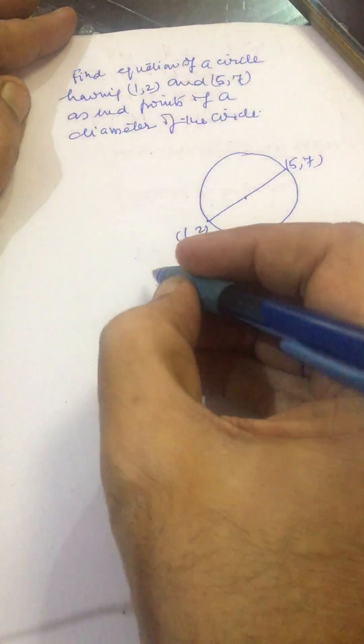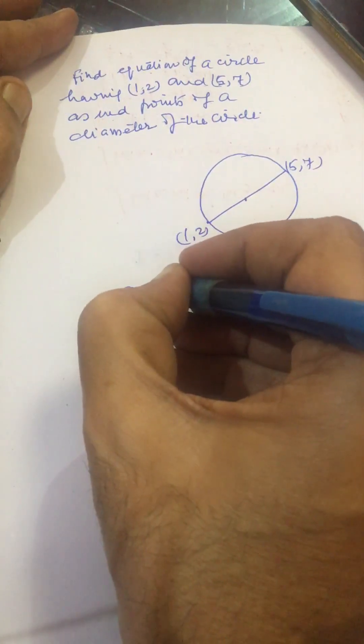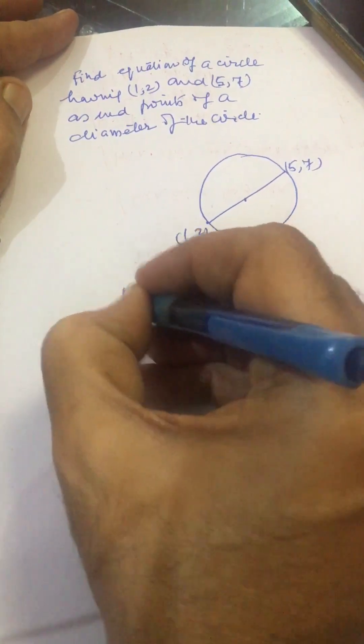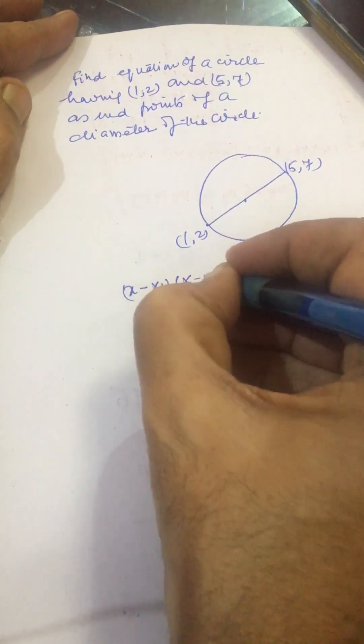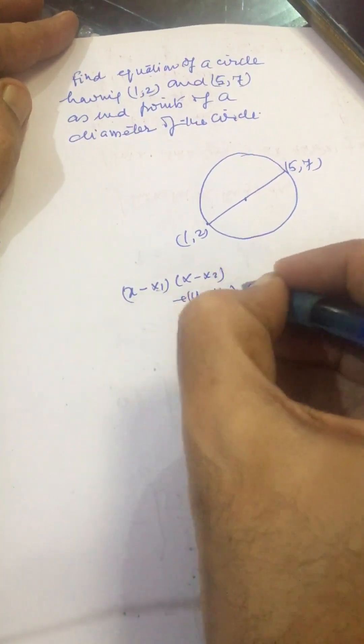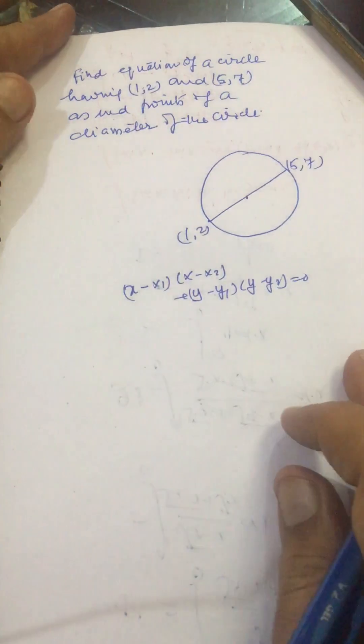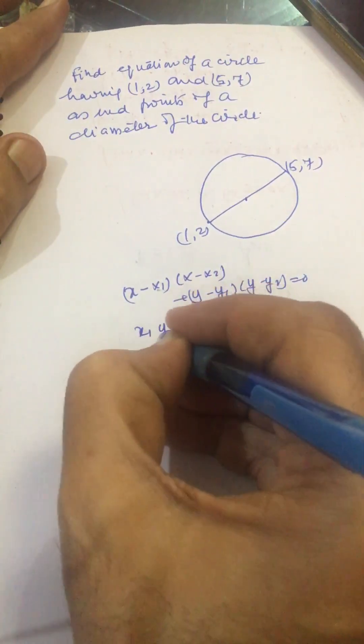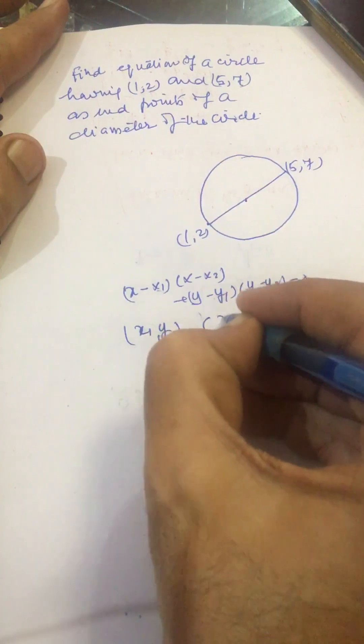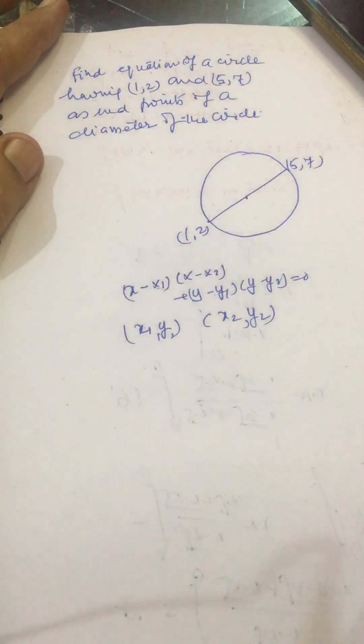This is the center. This circle equation is given by (x - x₁)(x - x₂) + (y - y₁)(y - y₂) = 0, where (x₁, y₁) and (x₂, y₂) are end points of a diameter.